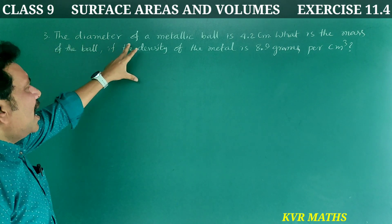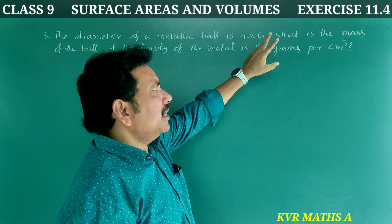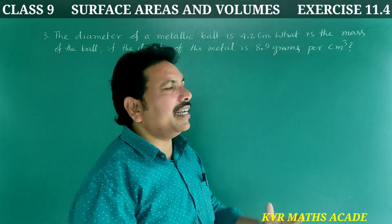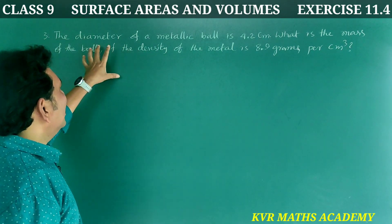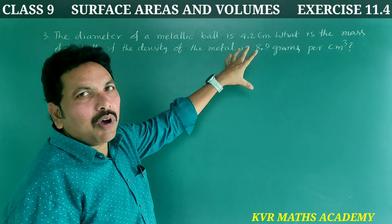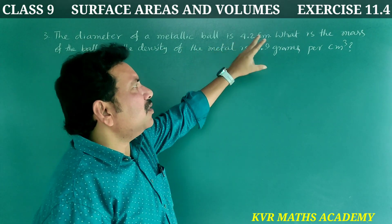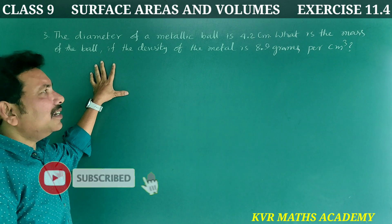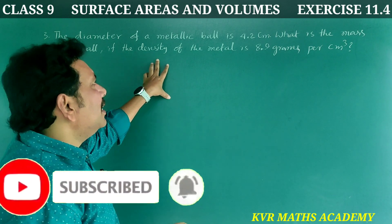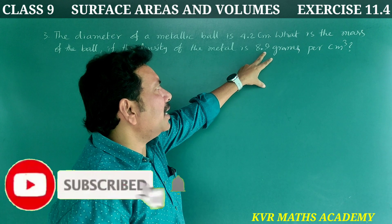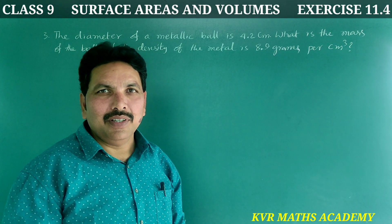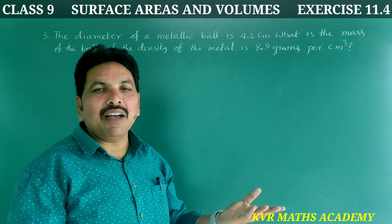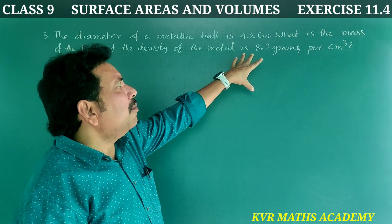Third question: The diameter of a metallic ball is 4.2 centimeters. What is the mass of the ball if the density of the metal is 8.9 grams per centimeter cube? The metallic ball is in the form of a sphere. We know the formula: density is equal to mass by volume. Using that formula, let us find the mass of the ball.